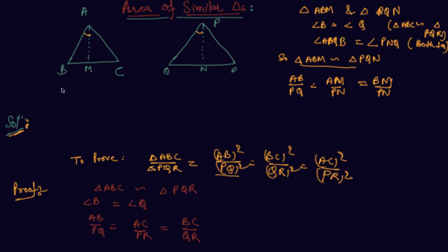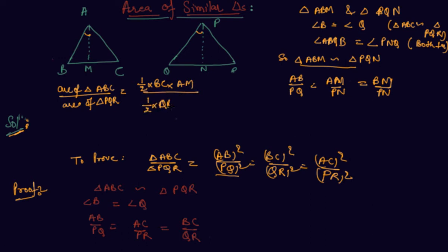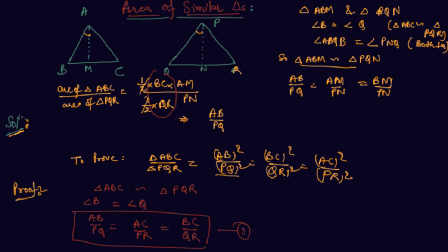Now if I write the area of triangle ABC upon area of triangle PQR: area of triangle ABC is half times BC times AM, and area of triangle PQR is half times QR times PN. So the ratio becomes BC upon QR times AM upon PN. The halves cancel out. Now I replace BC upon QR with AB upon PQ from equation one, and AM upon PN is also equal to AB upon PQ.